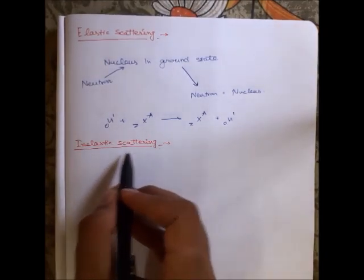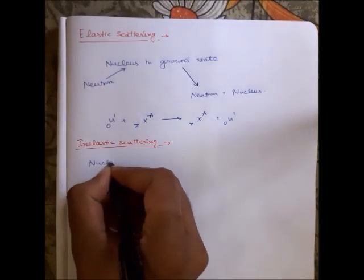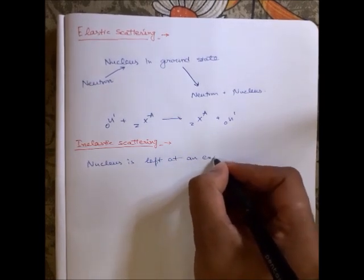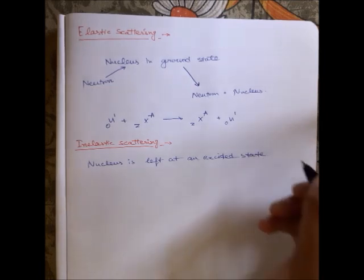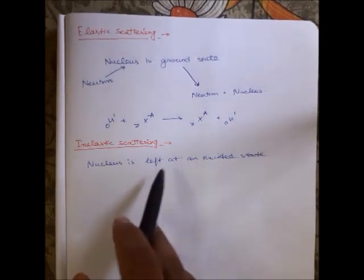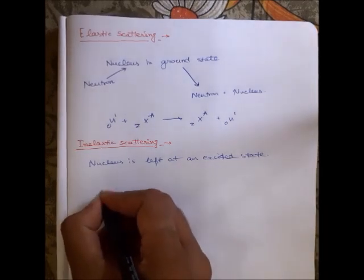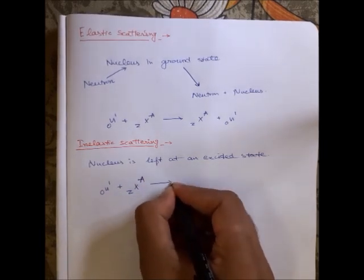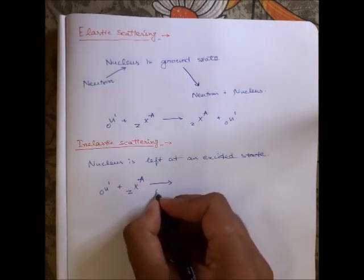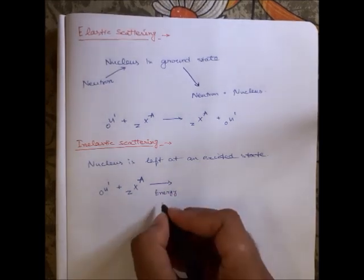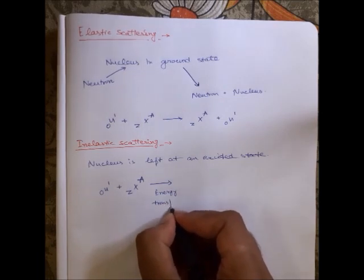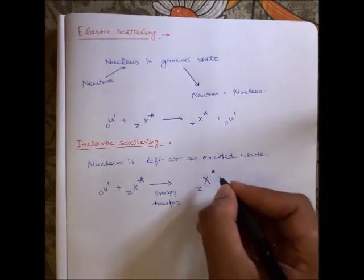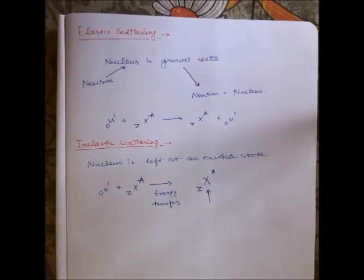Whereas in case of inelastic scattering, the nucleus is left at an excited state. There is basically energy transfer. A neutron comes in, it strikes a ground state nucleus, some amount of energy is transferred from the neutron to the nucleus, and this nucleus is left at an excited state. This is an excited nucleus.